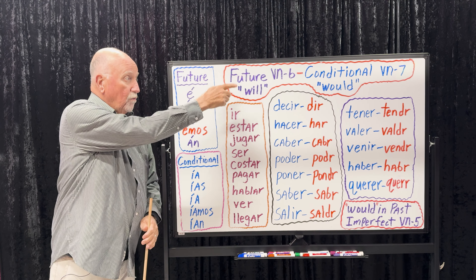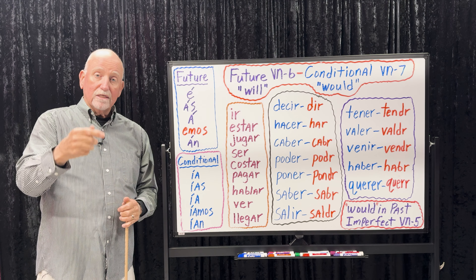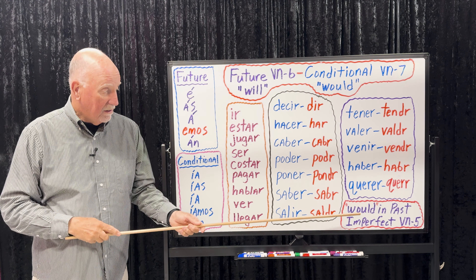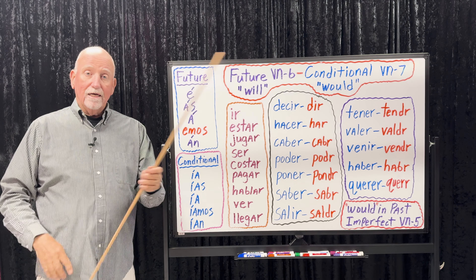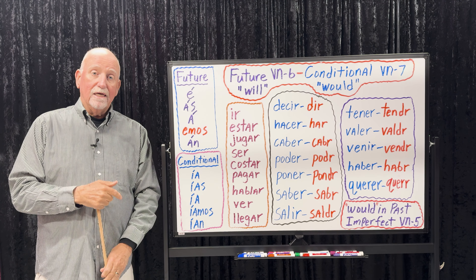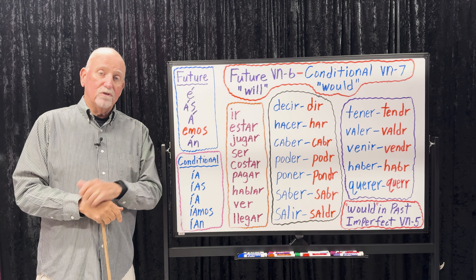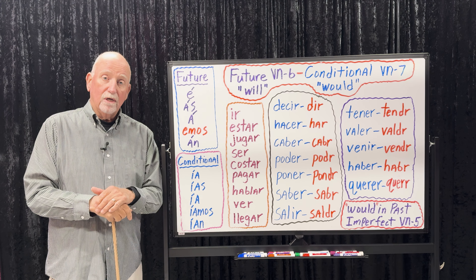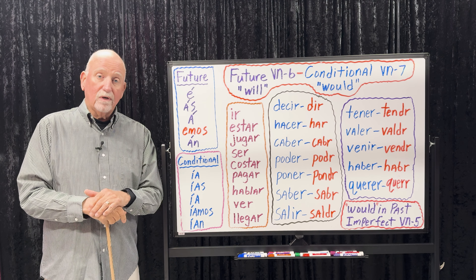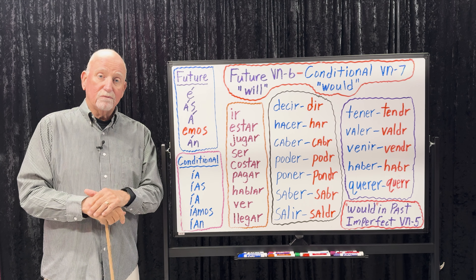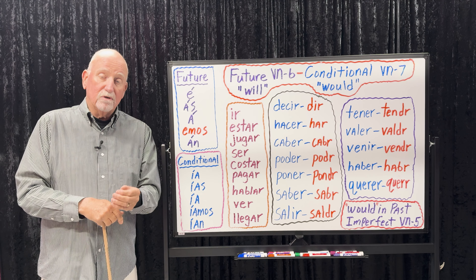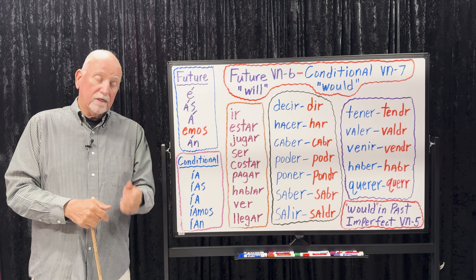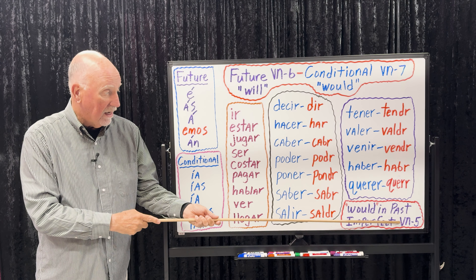Will is future. Would — what you would do today, tomorrow, next week, or in the future — is conditional. But keep in mind: 'would' in the past, like 'I would drink a lot of milk when I was a kid' — cuando era niño tomaba mucha leche — or 'we would go to the beach a lot' — íbamos a la playa mucho — that's imperfect, which is verb number five.